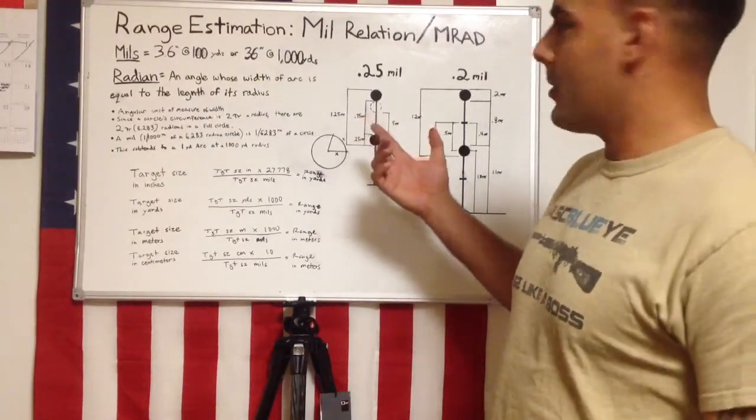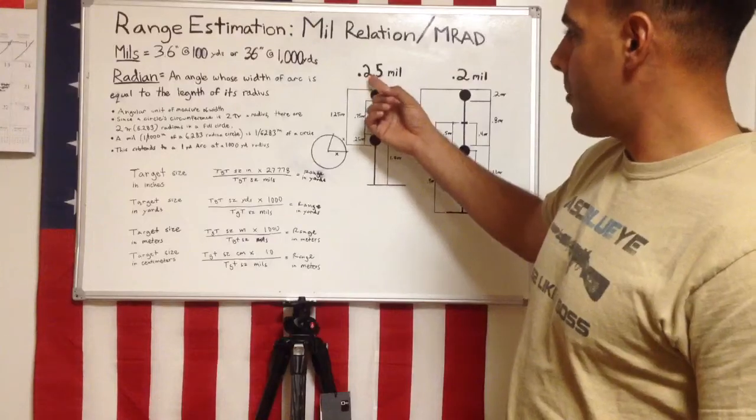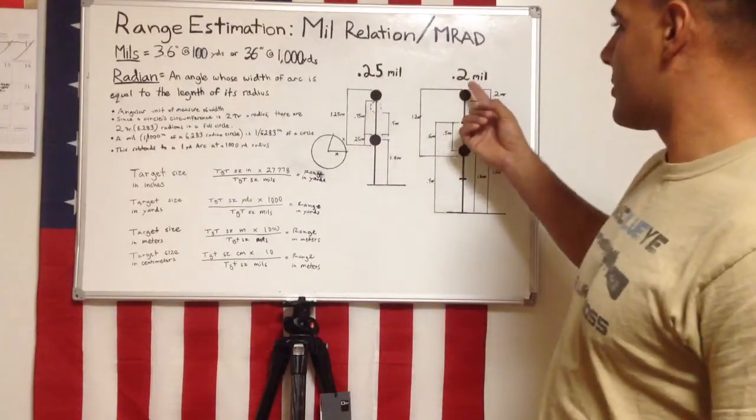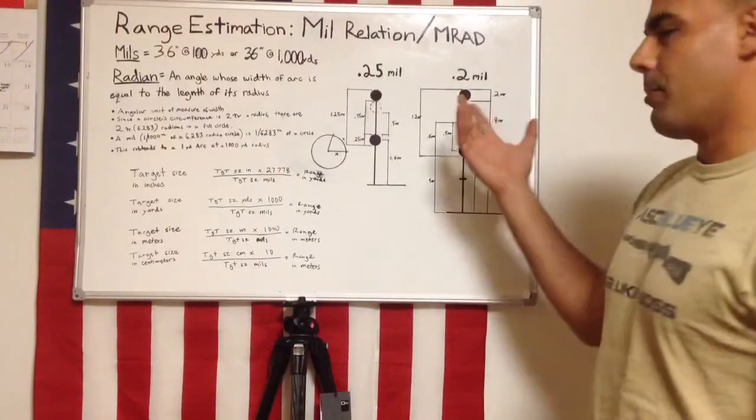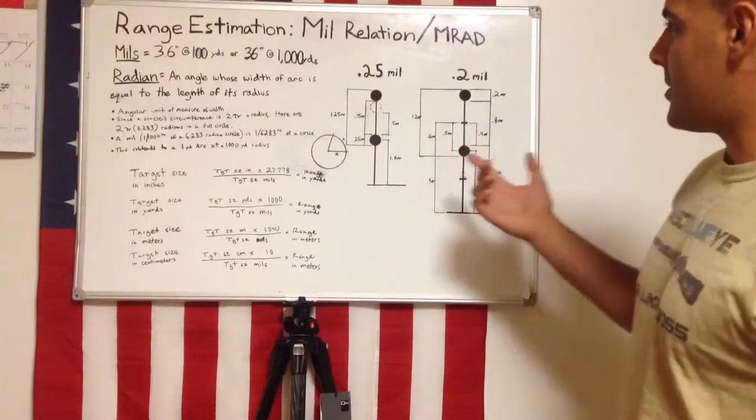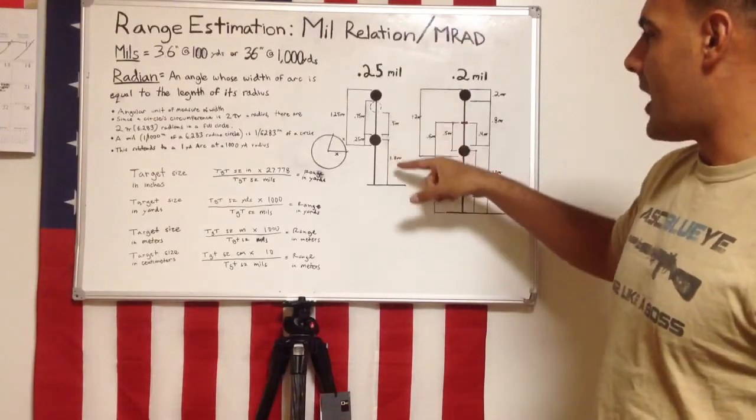Most dots, or mill dot reticles, are quarter mills or 0.2 mills. I like the 0.2 mills better because it gives me a little bit more options. With a quarter mill, you have your quarter mill dot.